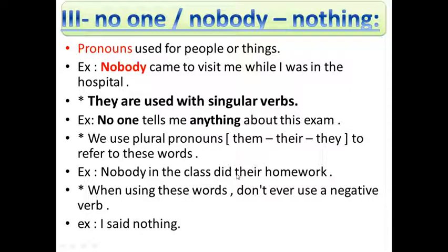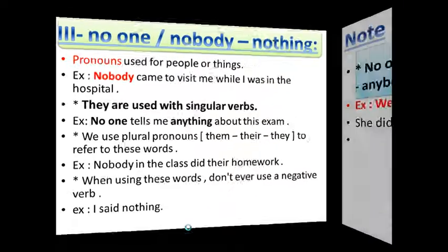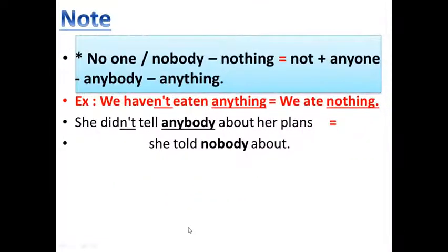Nobody in the class did their homework. When using these words, don't ever use a negative verb. I said nothing. Note: no one, nobody, and nothing are equal to not plus any. Not plus anyone. Not plus anybody. Not plus anything. Equal to no.